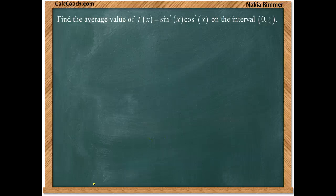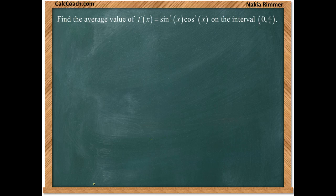Find the average value of the function f of x equals sine of x to the fifth times cosine of x to the fifth on the interval from zero to pi over four.